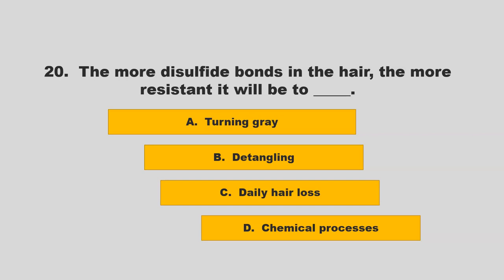The more disulfide bonds in the hair, the more resistant it will be to blank. Is it turning gray, detangling, daily hair loss, or chemical processes? If you chose D, chemical processes, you are correct.